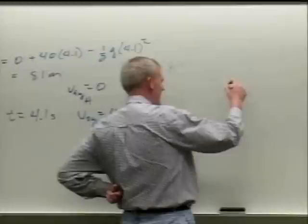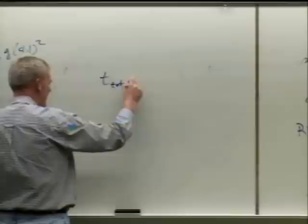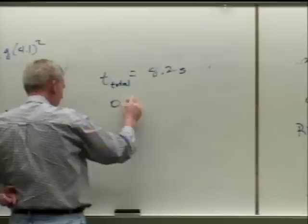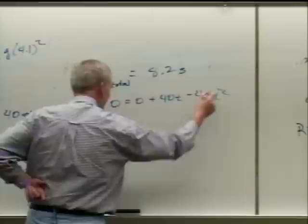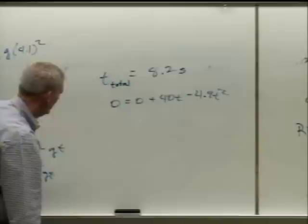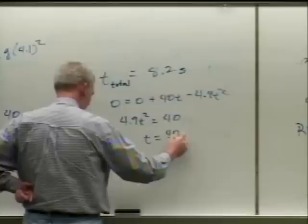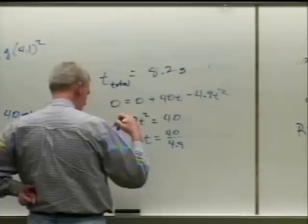For the range: the total time in the air was about 8.2 seconds — double the time to max height. Some of you cleverly set zero equals 40t minus 4.9t squared, which gives 4.9t squared equals 40t.